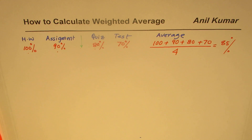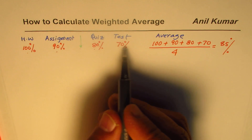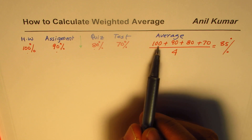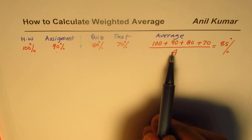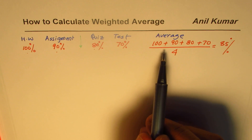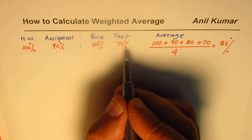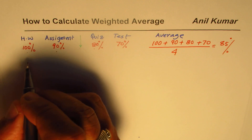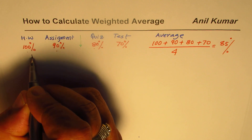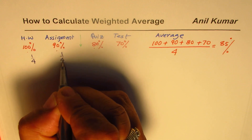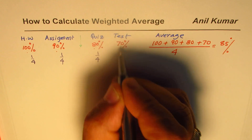This happens when all the tests, homeworks, and assignments are at par — they have the same weight. What we are saying is that everything has a quarter weightage: one-fourth of homework, one-fourth of assignment, one-fourth of quiz, and one-fourth of test are being added to find the average.